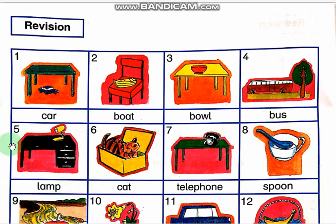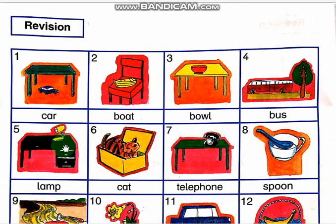Okay. Next, a lamp. What is this? It is a lamp. What color is it? It is yellow. It is a yellow lamp. Where is the yellow lamp? It is on the black table.